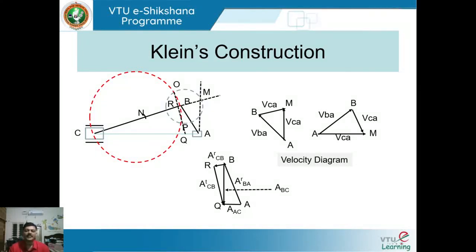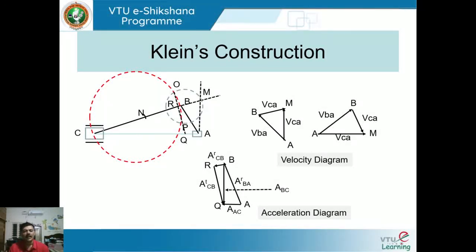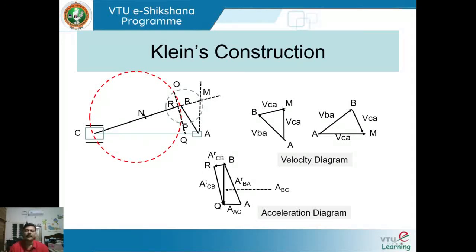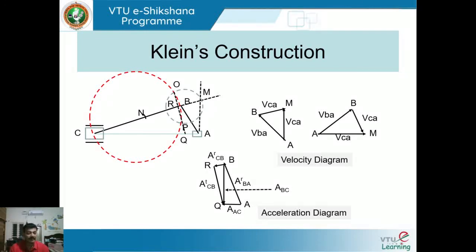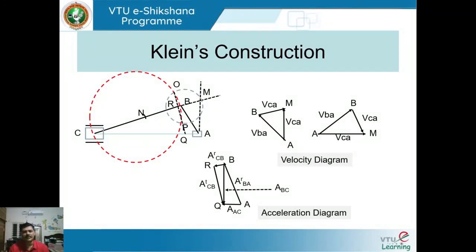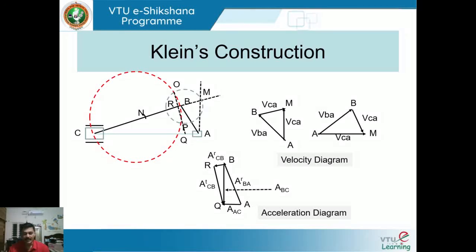This is how, using Klein's construction, we can find the velocity diagram as well as the acceleration diagram. This completes the module. Klein's construction problems for velocity and acceleration are normally not given in examinations, but you can solve two or three problems as an assignment or test. This method can only be used for the slider crank mechanism.